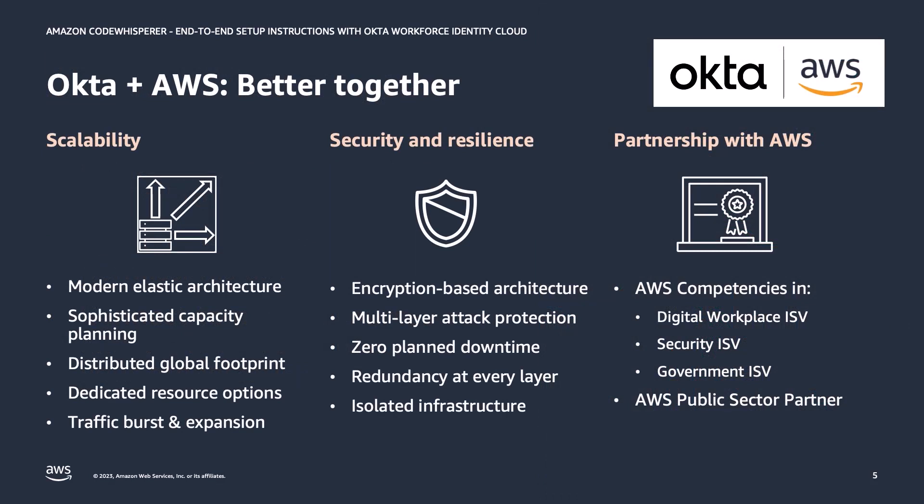AWS customers commonly configure IAM Identity Center to use an external identity provider, such as Okta Workforce Identity Cloud, as a primary workforce identity store and authentication service. Okta's service is itself built on AWS with a modern elastic architecture designed for scale and resiliency. Combining Okta with Identity Center gives you all the benefits of Okta's sophisticated, centralized identity management capabilities, including integration with human capital management systems, plus fine-grained control over your AWS accounts, applications, and resources at scale and with a single configuration point.